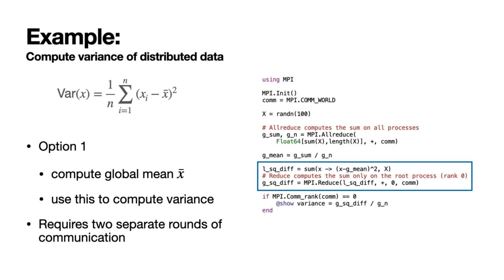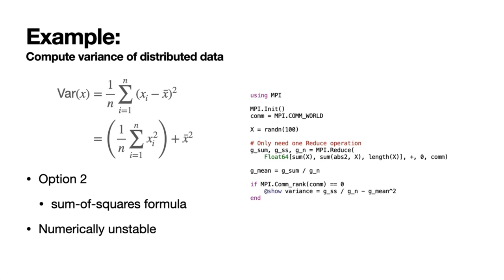A simpler option is to use the sum of squares formula for computing the variance. This requires only one reduce operation, where we compute the sum, the sum of squares, and the length of the vectors. The downside is that it's very numerically unstable.